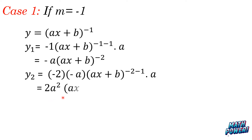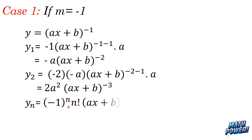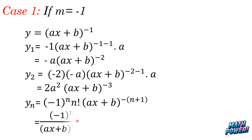This can be simplified as 2a^2 times (ax + b)^(-3). Then yn can be written as (-1)^n times n! times a^n divided by (ax + b)^(n+1). This will be our final answer.